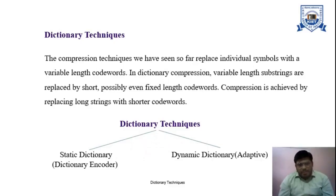Earlier, when we had compression techniques, we have seen that we replace individual symbols with variable length codewords. But in dictionary compression, we have variable length substrings which will be replaced by short and possibly even fixed length codewords. Compression is achieved by replacing long strings with shorter codewords.